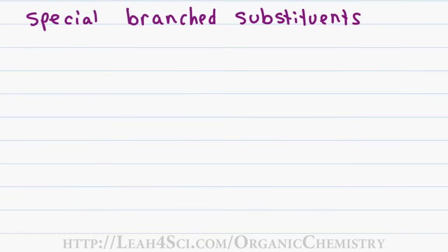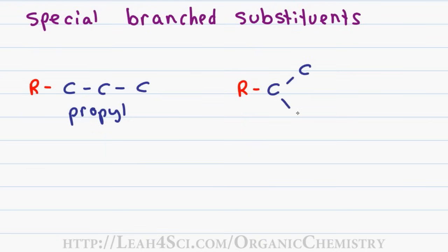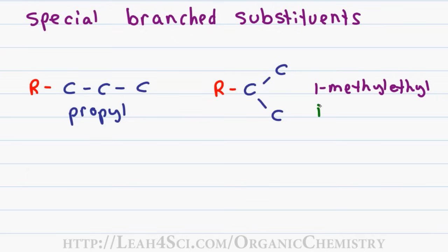If naming those branched substituents was a little tedious, I have good news. Certain substituents have accepted abbreviations that are much easier to name. I'll use R to represent the parent chain so we can focus on the substituents. A substituent of 3 carbons in a row with associated hydrogens is called a propyl substituent. However, when 3 carbons are attached to the parent chain by the second rather than the first carbon, you can name it a 1-methylethyl substituent, or use the shortcut: isopropyl. The prefix 'iso' tells you it has the same molecular formula as propyl but is connected differently — a constitutional isomer of the normal propyl substituent.